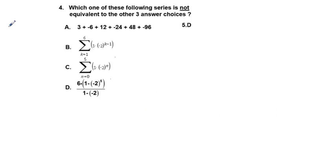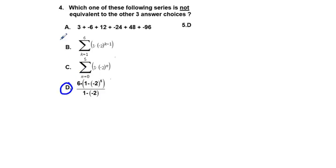Problem 4: Which of these is not equivalent to the others? If you just put options A, B, C, and D into the calculator, D is the only one that is different from the first three, so D is the correct answer.